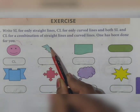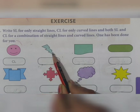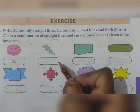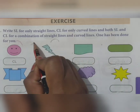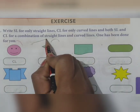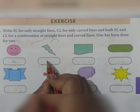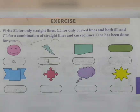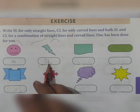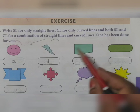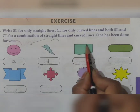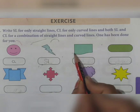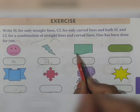Now see in this figure, everywhere there is a straight line, there are no curved lines. Curved lines means bent, and this line is not curved - it is straight. Therefore this figure is made up of only straight lines, so we write SL - S for straight, L for line. Now in this next figure, here is a straight line, and here also straight lines, but at the base there is a curved line.